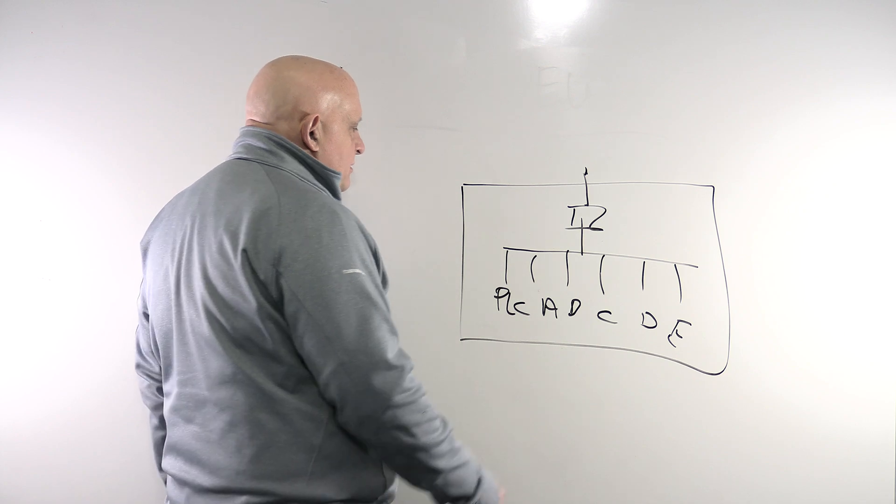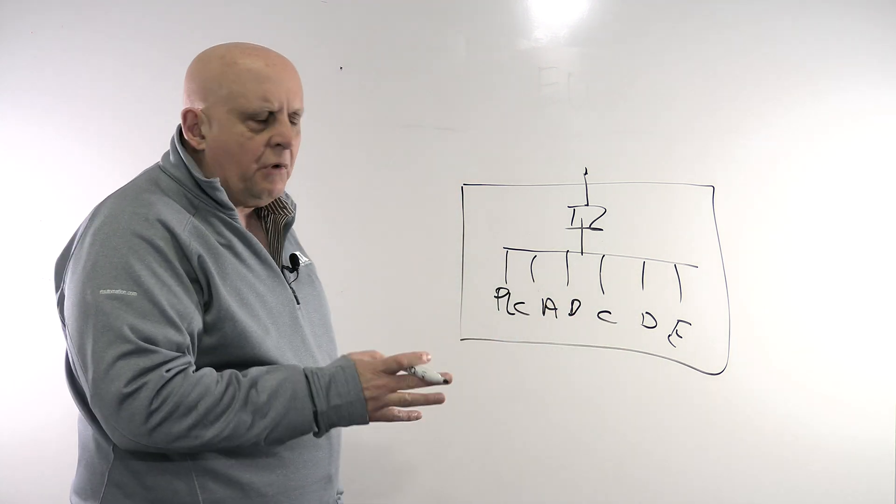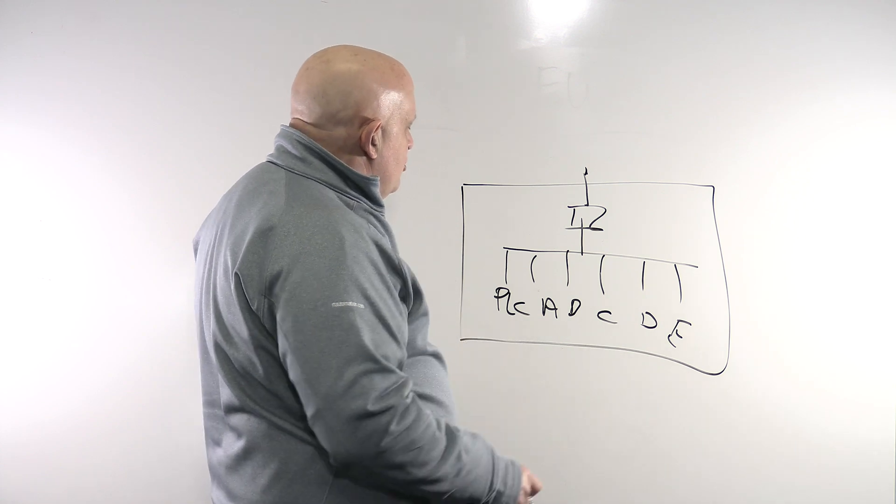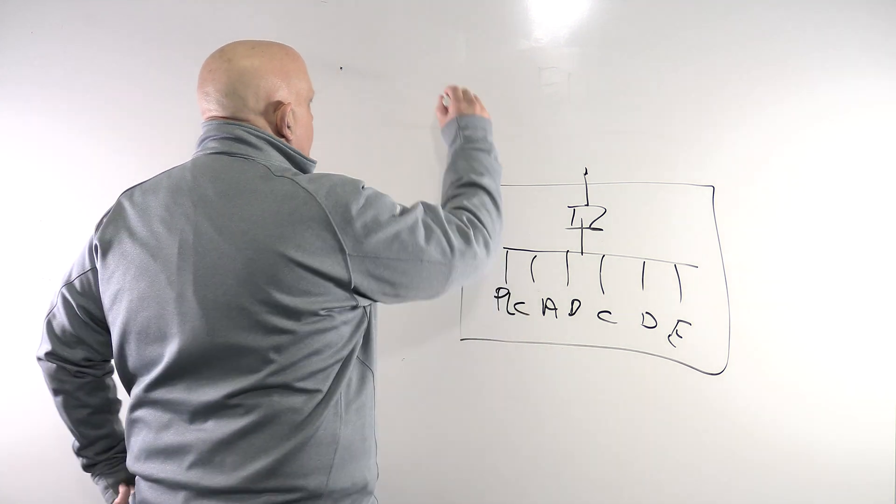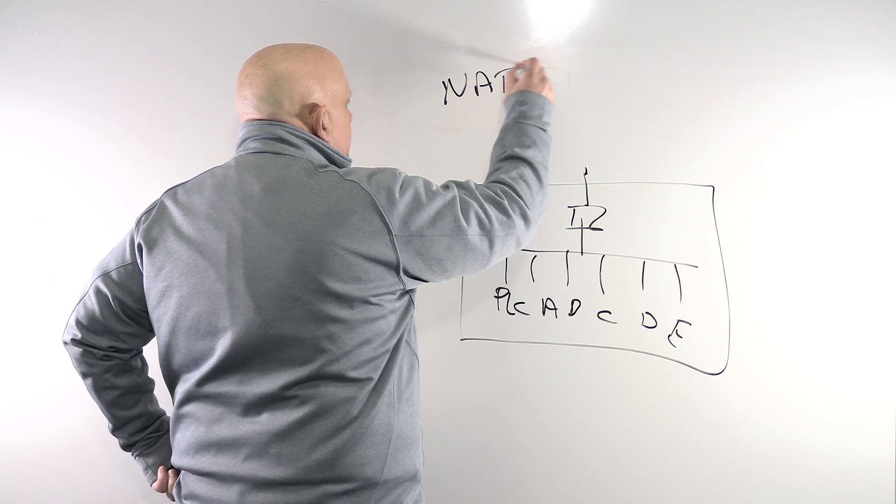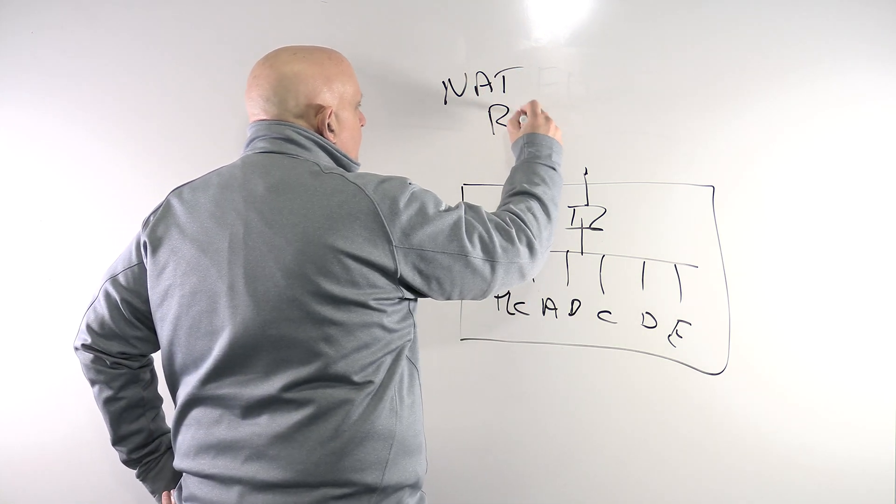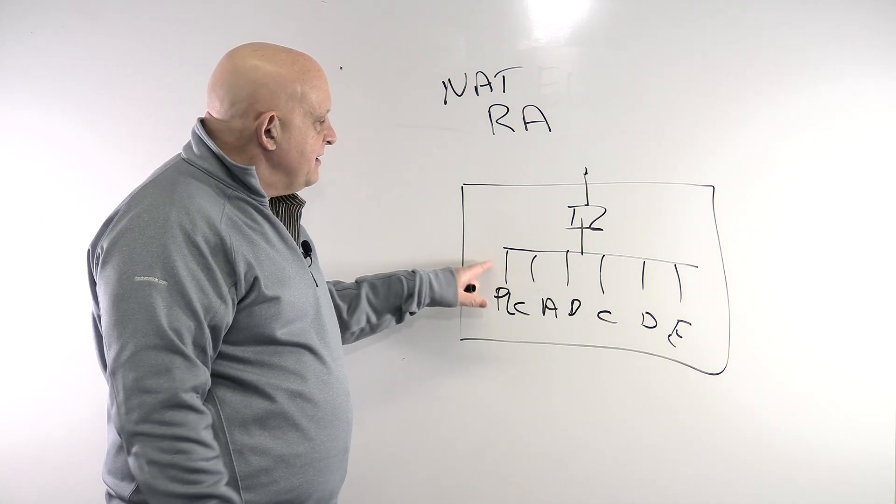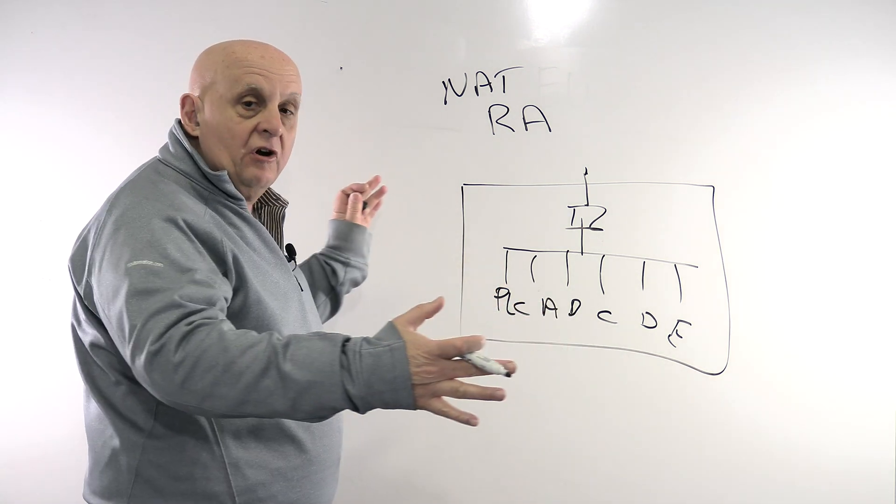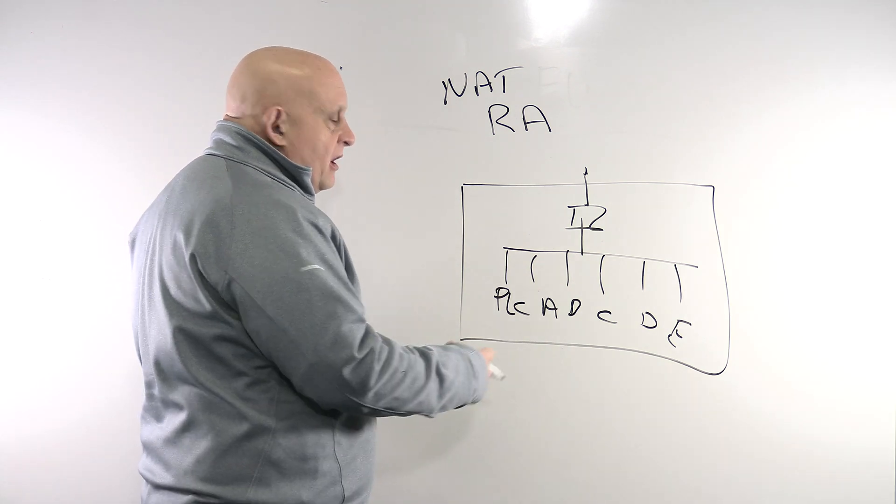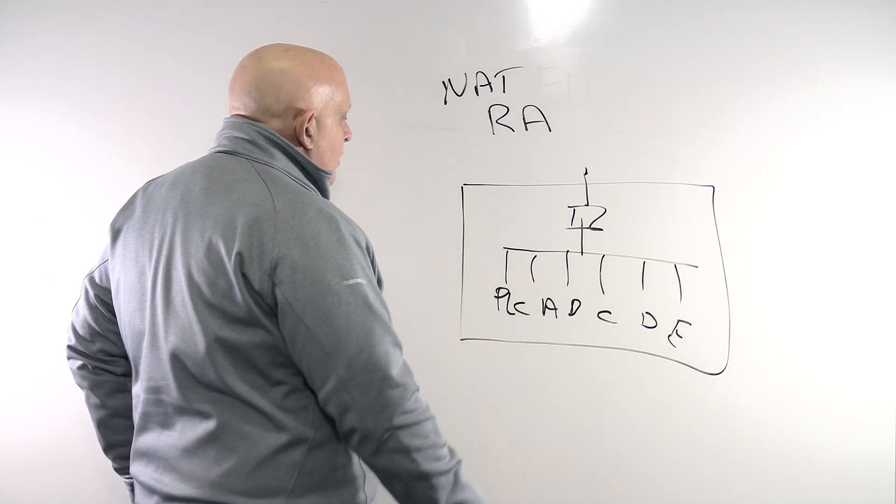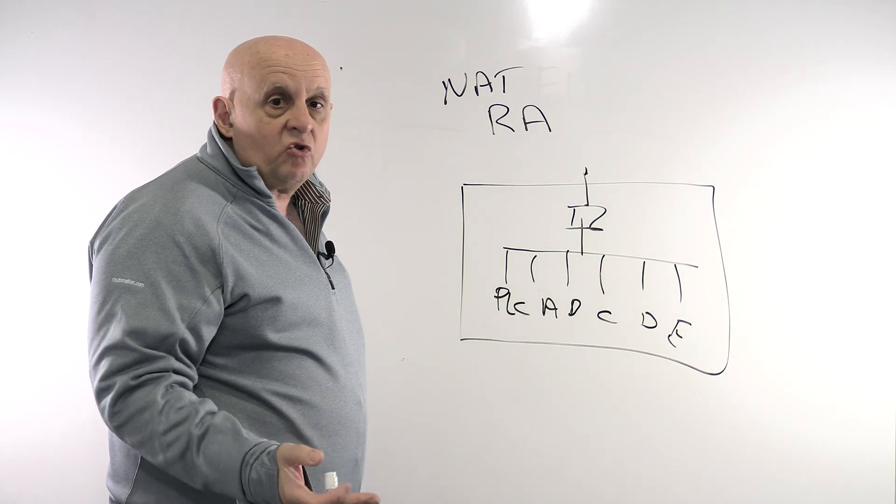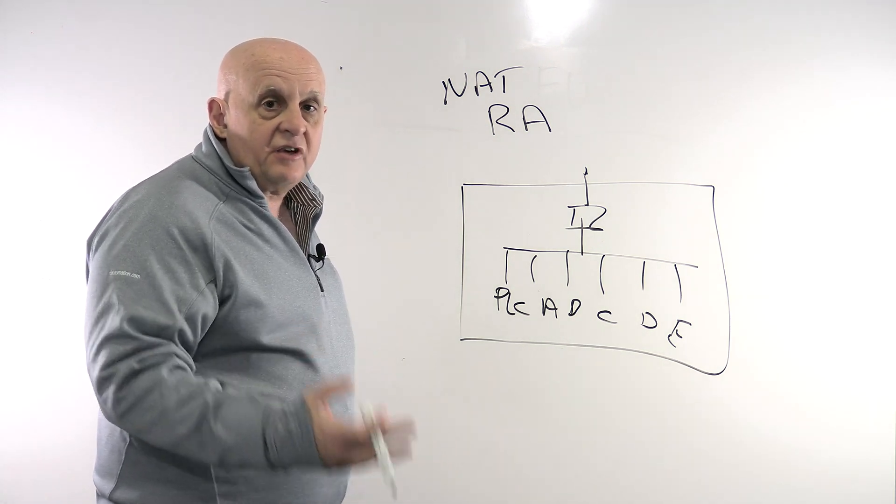This is the remote access thing. This is drawing not to scale, by the way. So here's the issue. It applies to NAT too, NAT or remote access. What happens is if somebody is authorized to get into this network, and this network could be pretty big, it could be hundreds of devices, it could have multiple PLCs. Once they have access, anybody who has that credentials has access to everything.